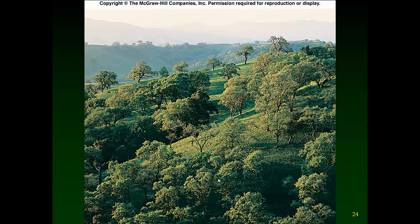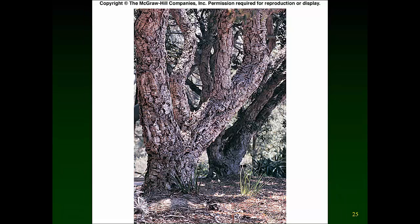This is what the Mediterranean biome looks like — scattered trees that are very fire resistant with open meadow areas between them. The bark of these trees is very thick. This is where cork trees grow — the cork comes from the bark, and sections of bark are peeled off to harvest it. That way when a ground fire comes through, it won't harm the trees.